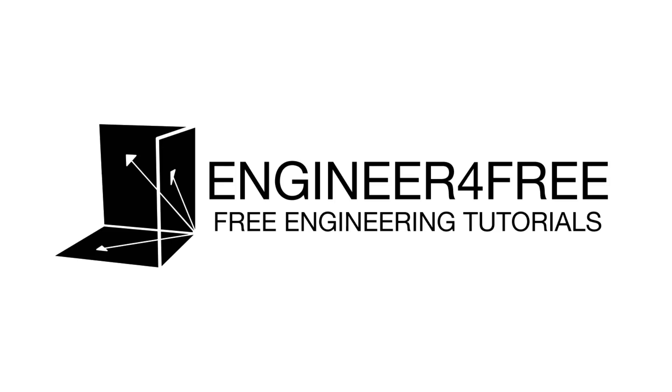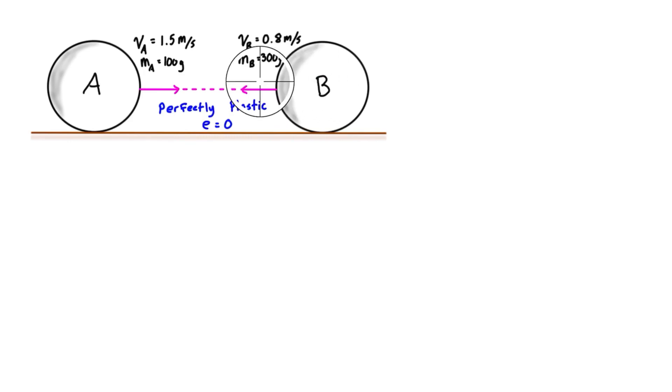Welcome back. I've got another central impact problem where we have bodies A and B colliding. The velocities are the same as the last example, but the masses are different. Now we have 100 grams and 300 grams.